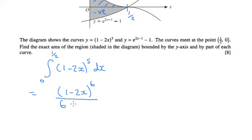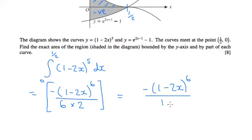But also I'm going to need to divide by the coefficient of x in this bracket. So that's a minus 2. So if we tidy that up, we've got minus (1 - 2x) to the power of 6, all over 12. And that's between a half and 0.